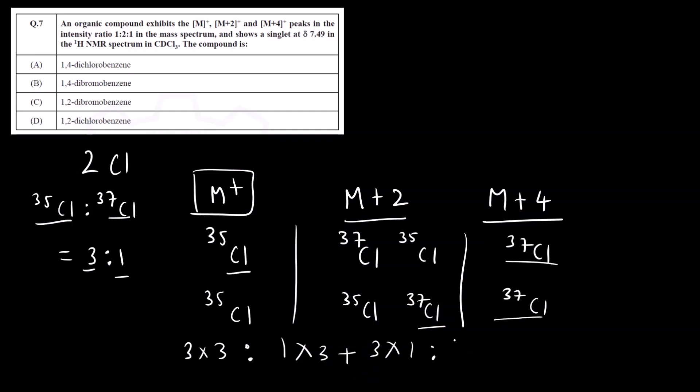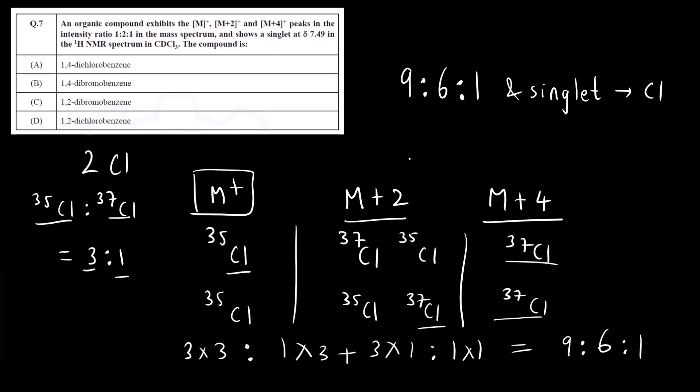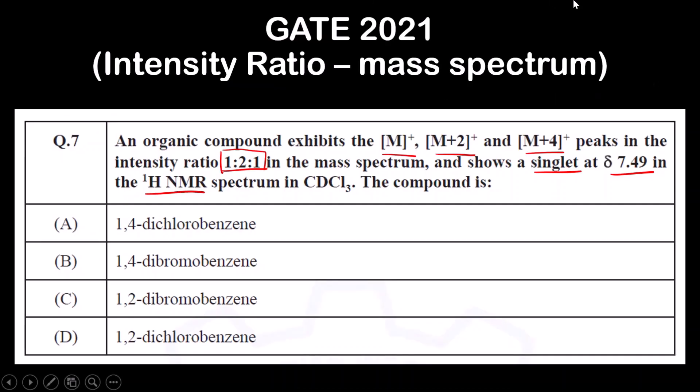Last one both are 37Cl, so 1×1. So the ratio is 3×3 is 9, 3×1 is 3 plus 3 is 6, and 1. So if the ratio would have been 9:6:1 and a singlet, then the correct answer would have been Cl. I will provide the link in the description if you have not watched the video. I have explained all this in detail in the video. You can see that. So here the correct answer is 1,4-dibromobenzene. That is correct answer is option B. I hope you have understood the solution. Thank you.